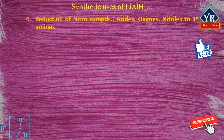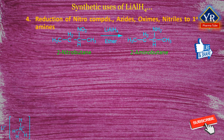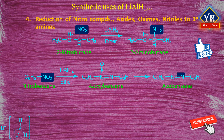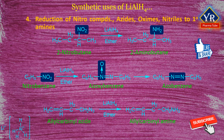Number 4: Reduction of nitro compounds, azides, oximes, nitriles, etc. to primary amines. Nitro compound — for example, 2-nitrobutane in the presence of lithium aluminium hydride in diethyl ether solution forms 2-aminobutane. However, nitrobenzene gives azobenzene via azoxybenzene. Azides — for example, allyl carbonyl azide produces allyl carbonyl amine, which is a primary amine, by the action of lithium aluminium hydride in ether solution. Oximes such as benzophenone oxime produce diphenylmethylamine.